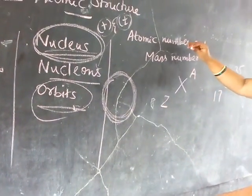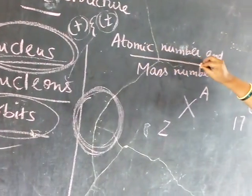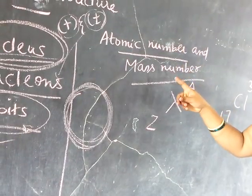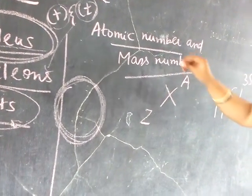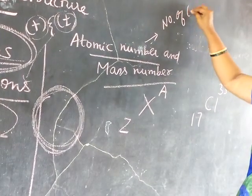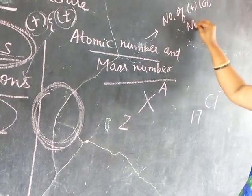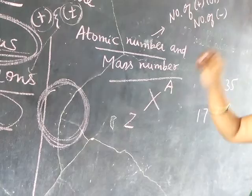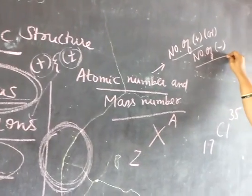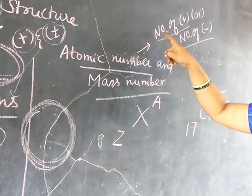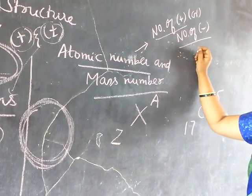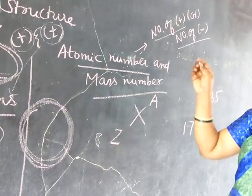Now, one of the most important topics: atomic number and mass number. What is meant by atomic number and what is meant by mass number? Atomic number refers to the number of protons or number of electrons. So how will you find out the atomic number? By using the number of protons or number of electrons. Remember, the number of protons will always be equal to the number of electrons.